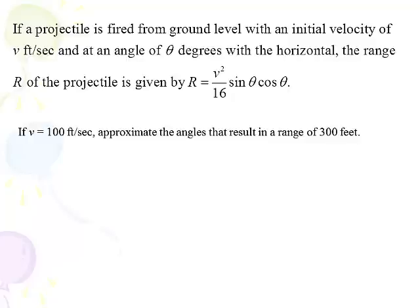So then the problem goes on and says if v = 100 ft/sec, approximate the angles that will result in a range of 300 feet. And notice it says angles. There will always be two answers to these problems. Well, there are three variables: R, initial velocity, and θ. We have to give you two of the three. So in this case, we gave you R and v, and we're looking for θ.